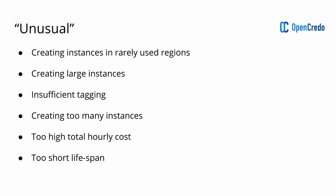Anything unusual is whatever falls outside this pattern: regions you don't normally operate in, very large or specialized instances, resources missing the established tagging pattern, too many instances at the same time, spending too much money in a short period of time, or machines created with too short a lifespan — brought up and destroyed within a couple of minutes. All of these are things you want to know about.